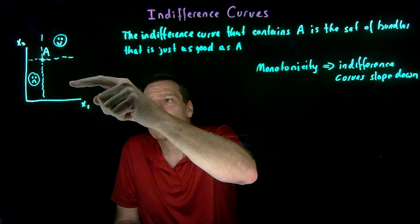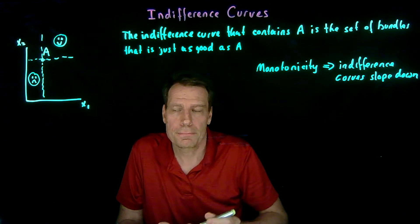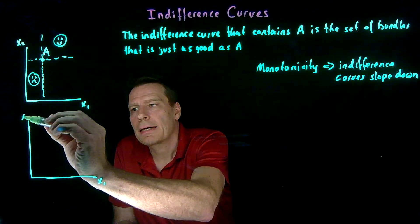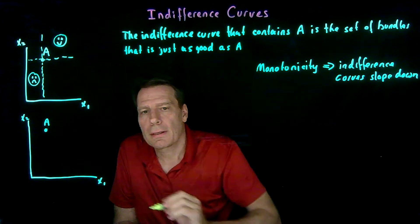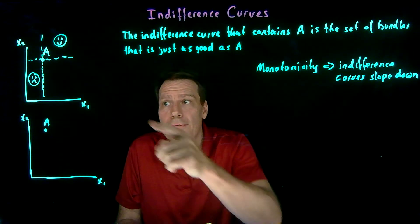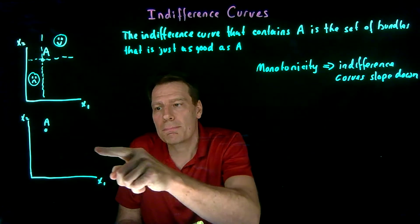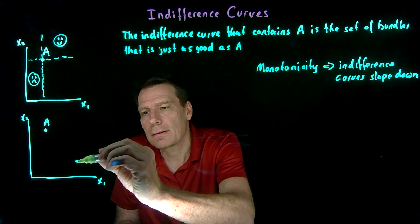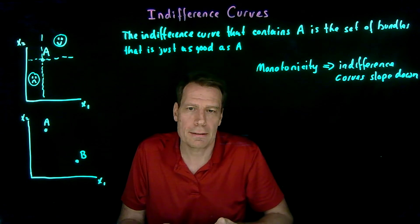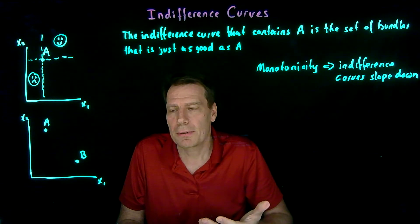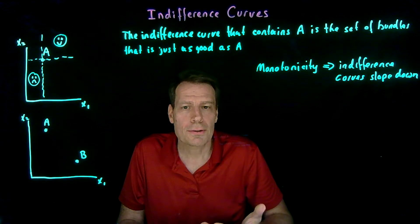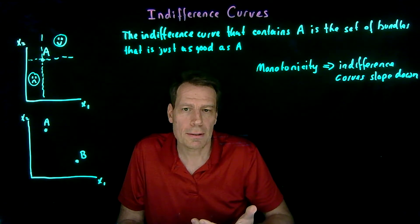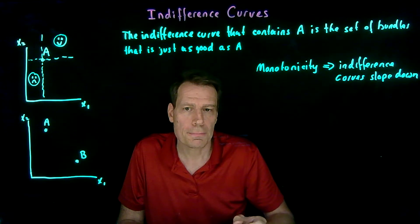So we know now that indifferent bundles are going to lie here and here. Now we can go to the next step. Start again with bundle A. Since we know that the indifferent bundles are going to lie somewhere here and here, we can just pick one and say, suppose we find a bundle B down here that's indifferent to bundle A. Now we have a setup that lends itself to thinking about convexity, because convexity says that if you're indifferent between two bundles, the averages between those bundles are going to be at least as good — usually better.